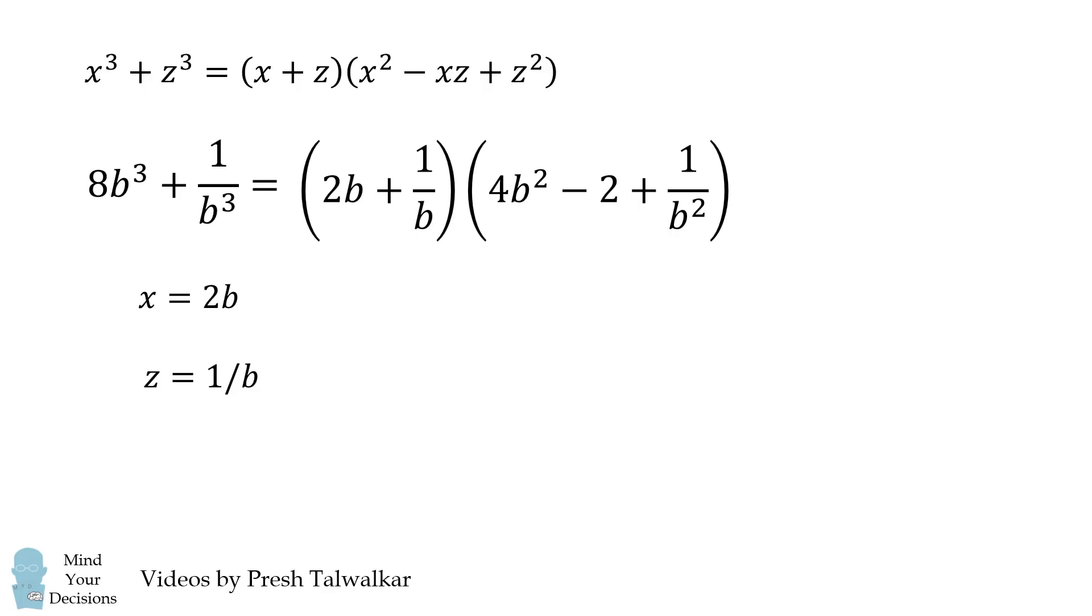To simplify this, notice that we know that 4b squared plus 1 over b squared is equal to 2. Therefore, in the second factor we have 4b squared plus 1 over b squared and we can substitute in 2.